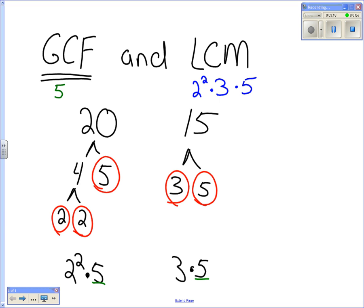Now, what is 2 times 2? Four. What's 4 times 3? Twelve. What is 12 times 5? Sixty. Very good, guys. It's sixty. So, the least common multiple is sixty.